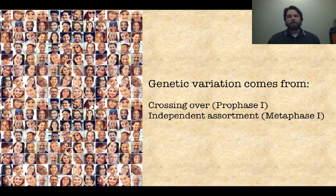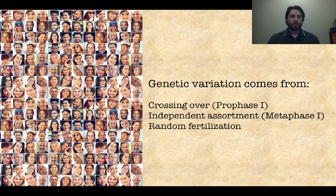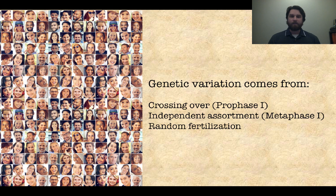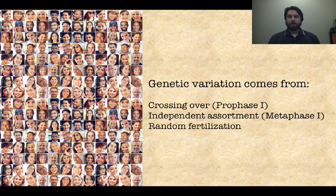To go back to that key concept we started with: genetic variation is a wonderful thing, and sexual reproduction helps this out very much. There are three main reasons for genetic variation. First, crossing over during prophase I, where homologous chromosomes share and swap genetic information. Second, independent assortment during metaphase I, where homologous chromosomes can line up in many different ways depending on how many chromosomes you have. And third, random fertilization — the concept that only one sperm can get to the egg, which introduces a lot of variation.